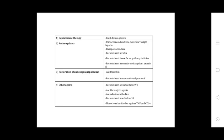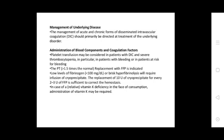Management of underlying disease: the management of chronic form disseminated intravascular coagulation should be primarily directed at the underlying disorder. Administration of blood components and coagulation factor-related transfusion may be considered in DIC with thrombocytopenia, particularly in patients with bleeding. Platelet levels above 1.5 times normal. Replacement with FFP is indicated for low fibrinogen levels, about 100 mg per deciliter. Hypofibrinogenemia will require infusion of cryoprecipitate. Replacement of 10 units of cryoprecipitate or every 2-3 units should be sufficient to correct hemostasis. In cases of relative vitamin K deficiency, administration of vitamin K may be required.